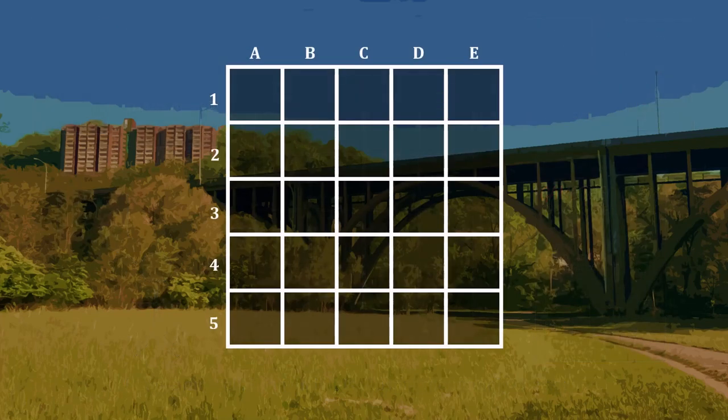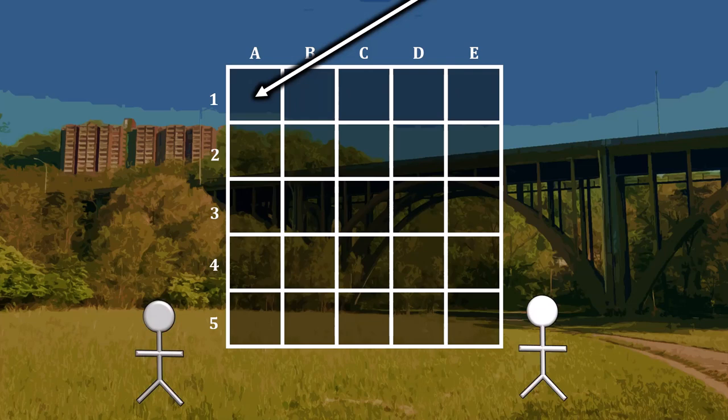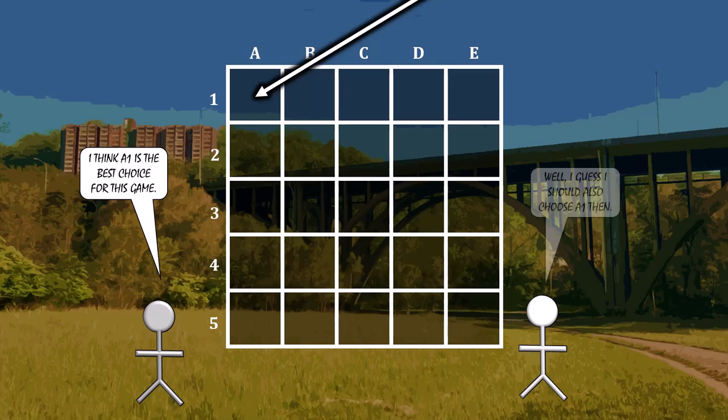Let's go back to that 5x5 grid. For example, A1 is a reasonable decision to make. Imagine a hypothetical conversation between two people playing this game. If the first one were to express that A1 is the best choice for this game, the second person might think to themselves that they should also choose A1. After all, the goal is to match.